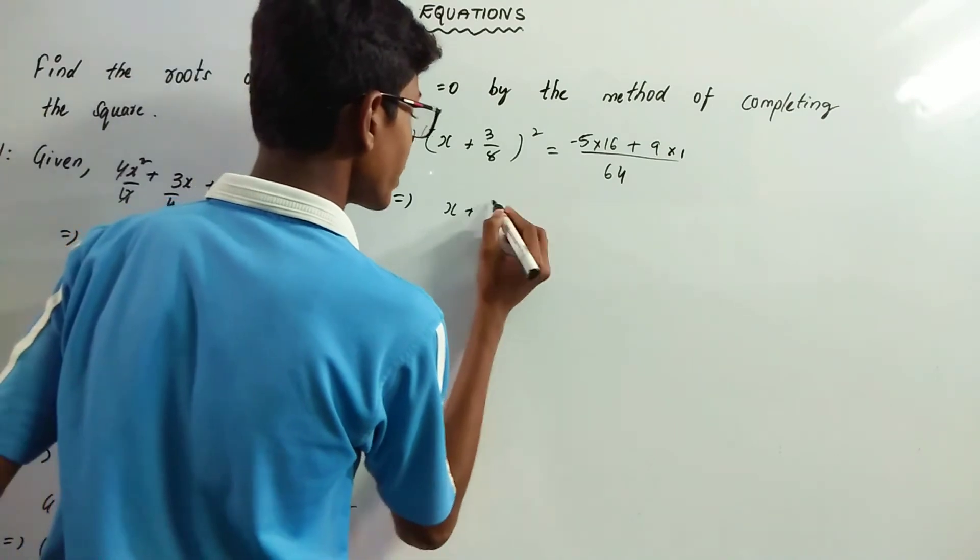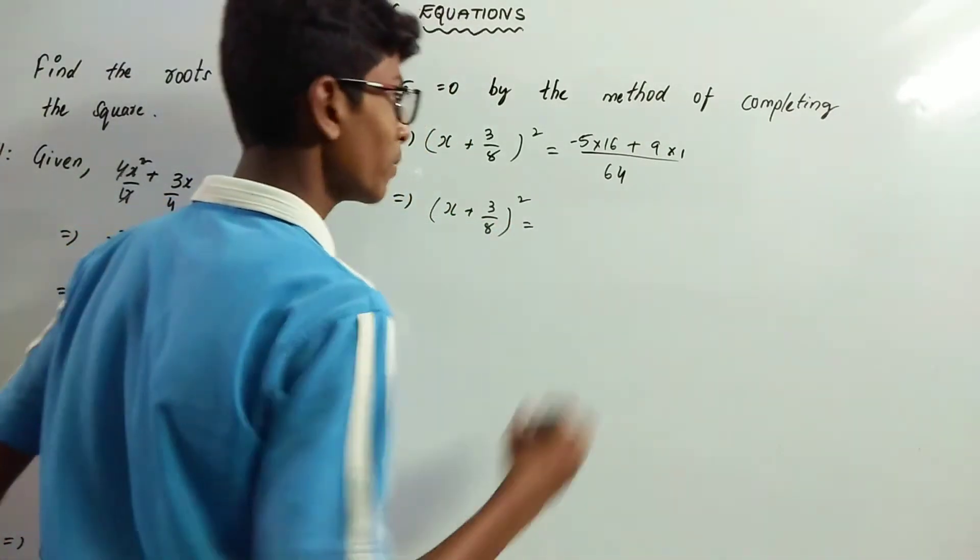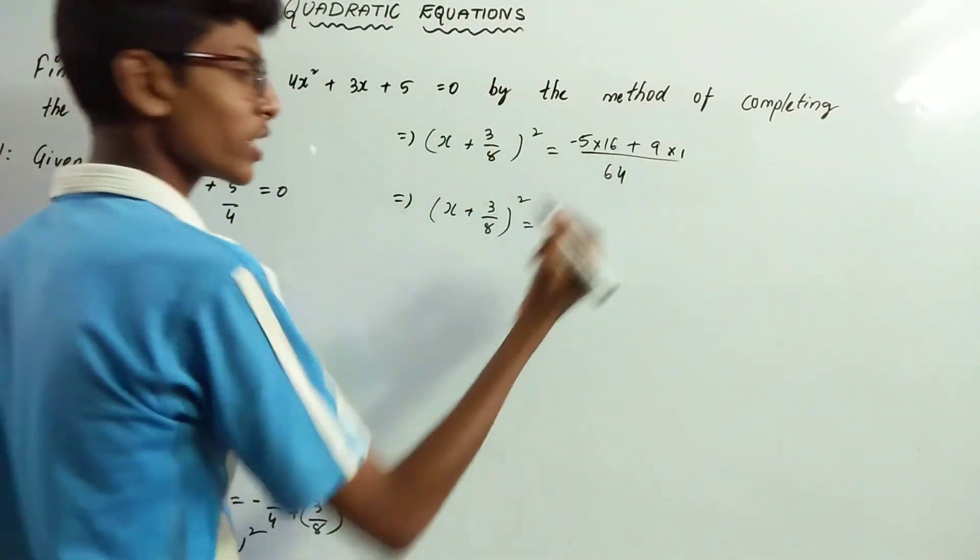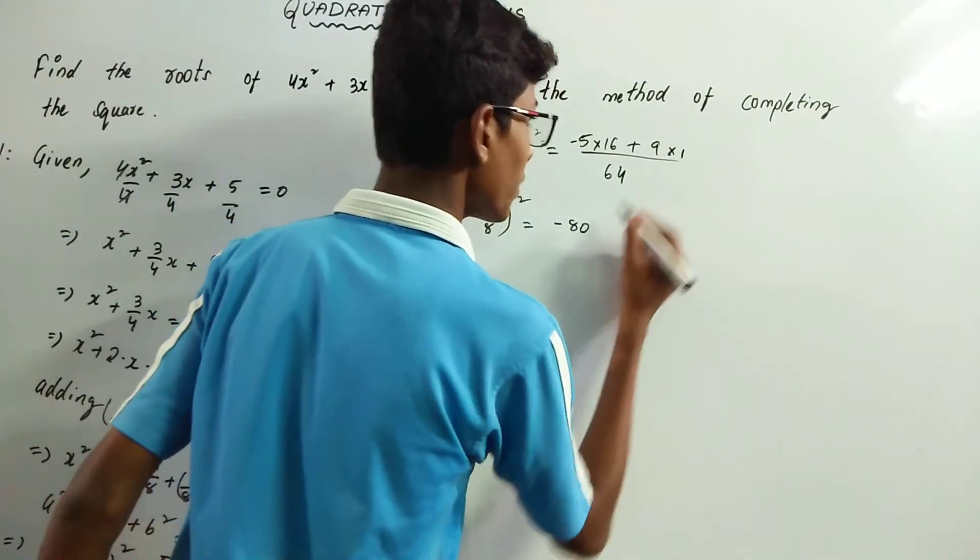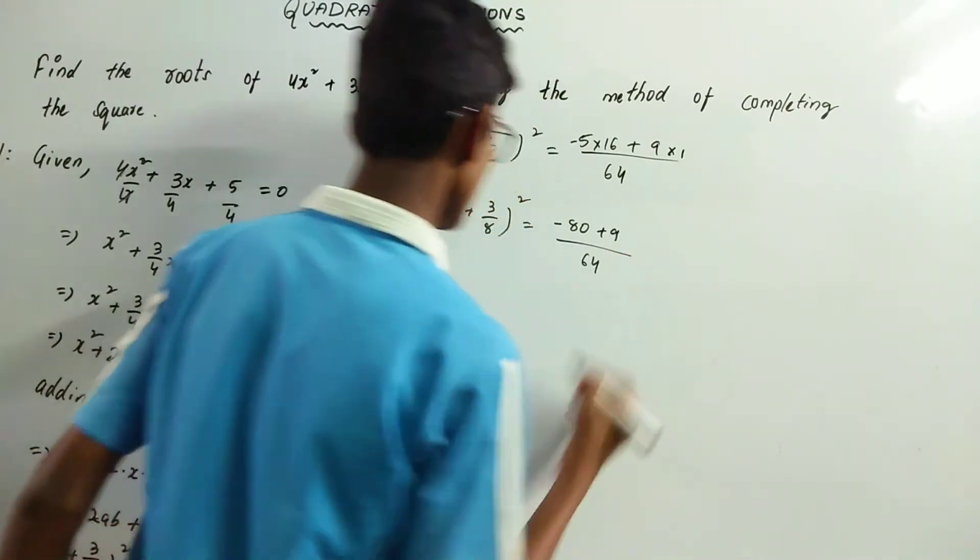So (x + 3/8)² = -5 × 16 = -80 plus 9 × 1 = 9, upon 64.